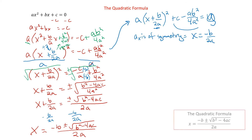That is the quadratic formula. The nice thing is we don't need to derive it every time — this was just to show you where it comes from, so it's not magic. Notice we have negative b over 2a — that's the axis of symmetry — plus or minus something. So we go the same distance both ways, because it is symmetric. We're starting at the axis of symmetry and going both directions.